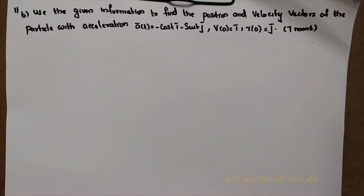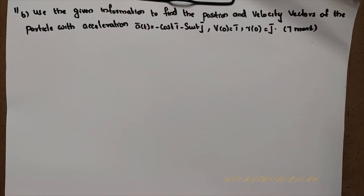Let's look at Part B. Use the given information to find the position and velocity vector of the particle with acceleration a(t) = −cos(t) i − sin(t) j, where v(0) = i and r(0) = j.